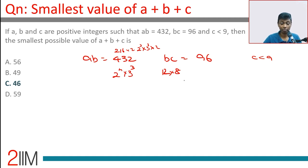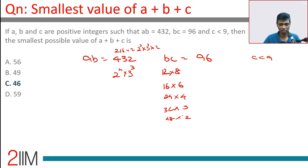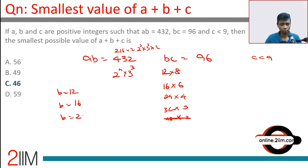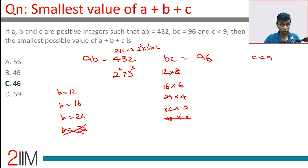c could be 8, b could be 12. Keep it close — c could be 6, b could be 16. Testing other factors: 4 won't work, 3 into 32, 2 into 48, 1 into 96 — that is outlandish. So b is one of these four. b cannot be 32 since that is 2 to the power 5, but we only have 2 power 4 into 3 cube. If b is 16, that is 2 squared into 3, so a should be 2 squared into 3 squared remaining, which is 36. So b is 16, a is 27.